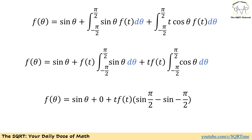Let's simplify the expression further. The first term, sine(θ), is already simple. For the second term, inside the integral we have f(t), which is not dependent on θ, so we can take it out. For the third term we do the same for t·f(t). Now we have two integrals to calculate. For the second term, we need the integral of sine(θ) dθ between −π/2 and +π/2. Since sine is an odd function, its integral over this symmetric interval is zero.